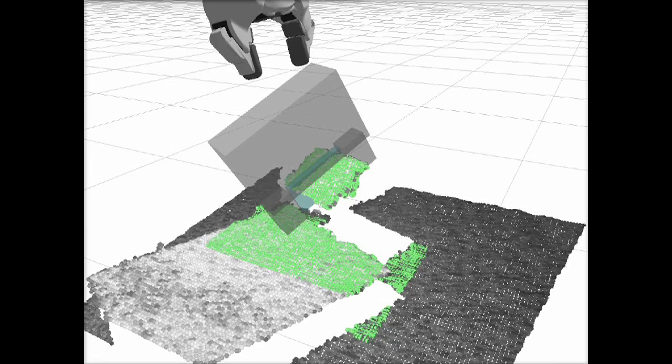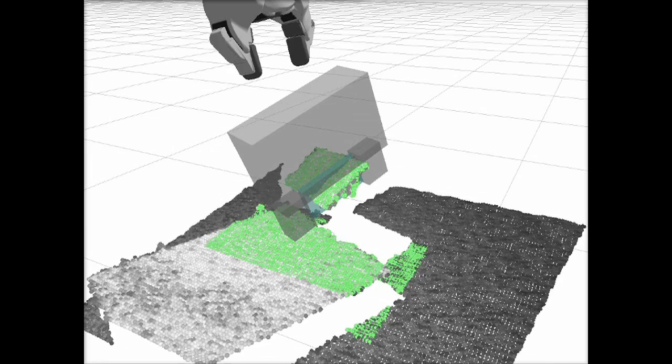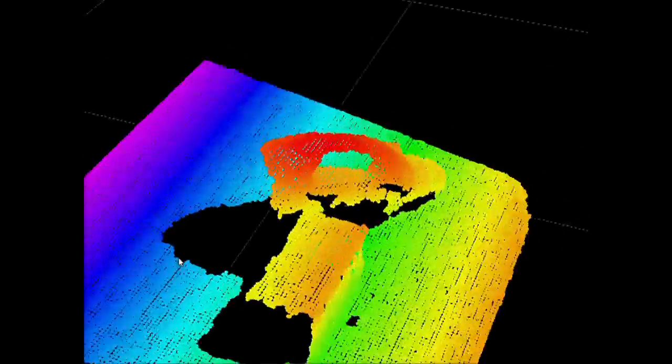Our grasp adjustment algorithm uses a cost function based on the 3D point cloud to evaluate candidate grasps and can be used with any point cloud source on the robot.